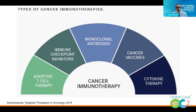Immune checkpoint inhibitors are basically drugs that take the brakes off the immune cells and activate them. Monoclonal antibodies are molecules that allow drugs or immune cells to localize to a specific target. They're like a laser-guided missile — the monoclonal antibodies are the laser guidance system — and they can focus any sort of treatment on one type of cell or cancer cell in the body.